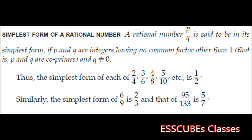Thus, the simplest form of each of 2 by 4, 3 by 6, 4 by 8 is 1 by 2. Similarly, the simplest form of 6 by 9 is 2 by 3, and that of 95 by 133 is 5 by 7. Before we move on, let's take an example and clarify this.